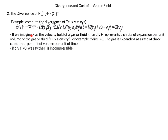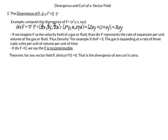The physical interpretation of divergence is: if we imagine f as the velocity field of a gas or fluid, then div f represents the rate of expansion per unit volume of the gas or fluid, also called the flux density. If div f equals 3, then the gas is expanding at a rate of 3 cubic units per unit volume per unit of time. If it were negative, it'd be contracting, and if zero it'd be neither — and we'd say it's incompressible. The divergence of any curl equals zero.